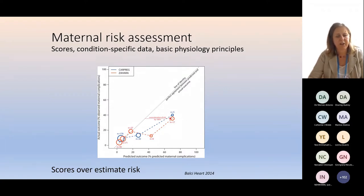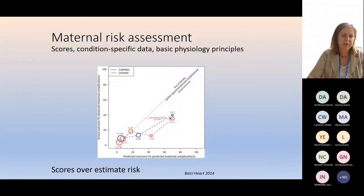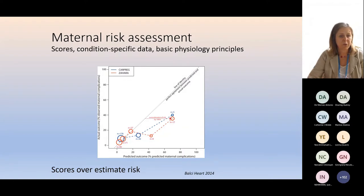This is a piece of work published in Heart a few years ago which took two of the most commonly used risk scores, CARPREG — that's Canadian — and Zahara — that's European. These are risk scores which take risks for specific cardiac features like LV outflow tract obstruction, LV impairment, arrhythmia — they're not lesion specific at all. They calculated the predicted outcome based on the risk score and compared it against the actual observed outcome. Once you get to a predicted outcome of 40% predicted maternal complications, it's actually overestimating by a factor of two. Risk scores overestimate risk at anything other than the lowest risk by a factor of about two.